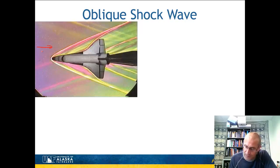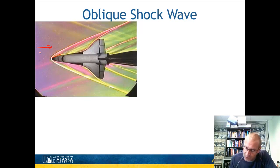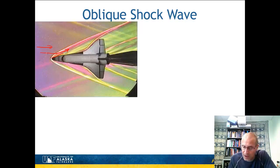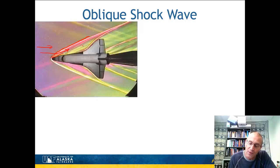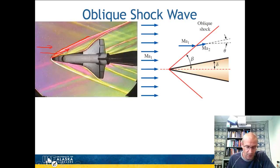Flow is coming in from this direction. The fluid that comes in must turn and flow along the side of the shuttle. So you have a turning of the flow, which compresses the material. This causes the flow to go from a supersonic condition to a slower condition, sometimes even subsonic, as the material becomes more compressed. The shock wave angle is a little bit greater than the turning angle, and the boundary layer between the shock wave and the surface grows in the flow direction.